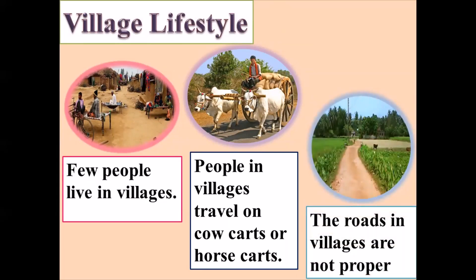They use cow carts, horse carts, or bicycles for transportation. The roads in villages are not proper. Like in Karachi, we have proper roads, big roads, big bridges. But in villages, they don't have proper roads — they have mud roads which are not properly constructed. They have only made an area and it is not properly made.